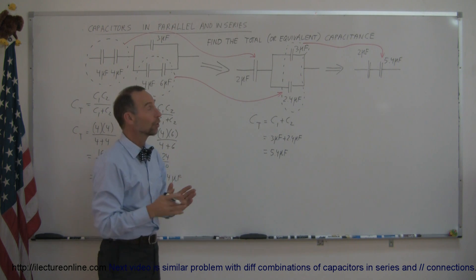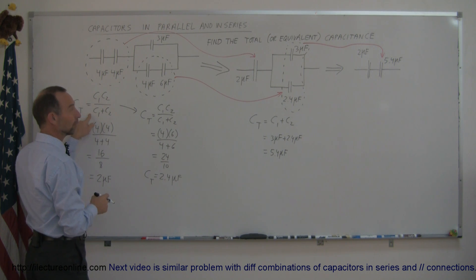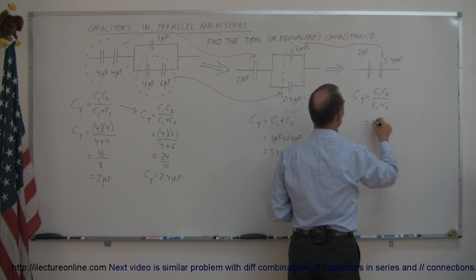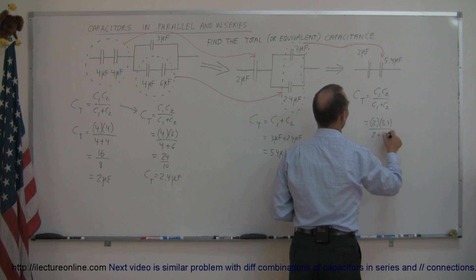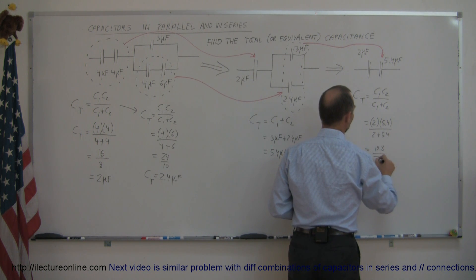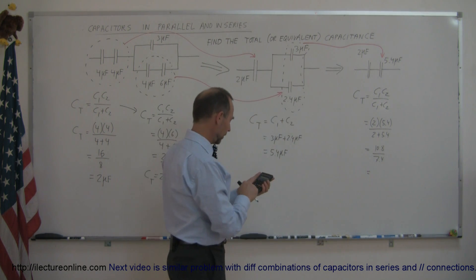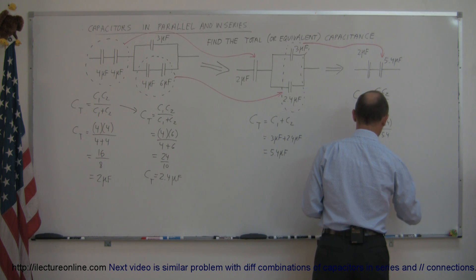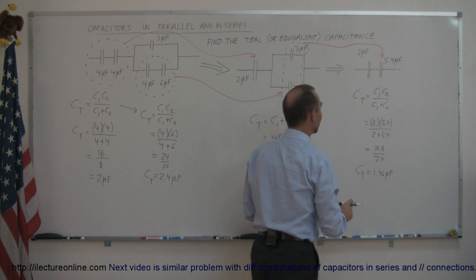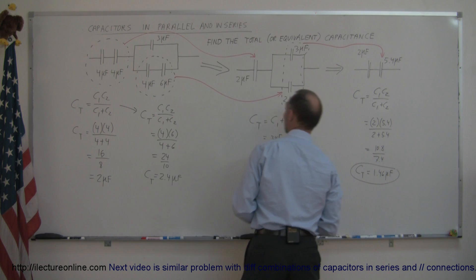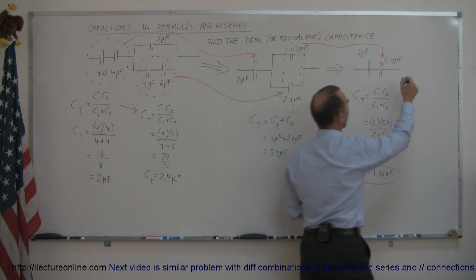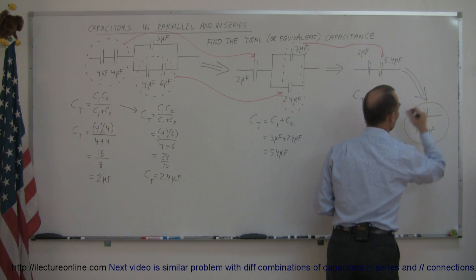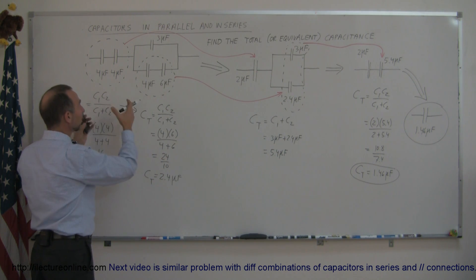Now we're left with just two capacitors and they are in series, so we use the product-over-sum method again. C total equals C1 times C2 over C1 plus C2, which is 2 times 5.4 divided by 2 plus 5.4 — that's 10.8 divided by 7.4. Using a calculator, that equals 1.46 microfarads. This single capacitor represents the equivalent capacitance that can replace the entire original circuit.